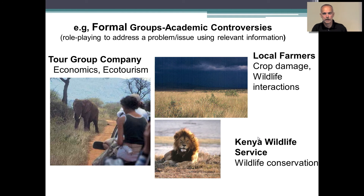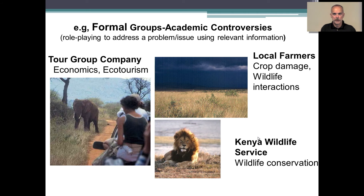One example of a formal group that I've used in my own classes is academic controversies. With academic controversies, this is a pedagogy where students are presented a problem or issue that's very complex, and I provide them relevant information to help them make decisions. Academic controversies usually have at least two stakeholder groups or two viewpoints on a controversy. The example I'm showing here is the management of wildlife and natural resources at the Maasai Mara National Park in Kenya.